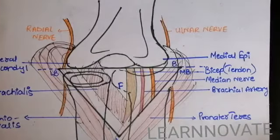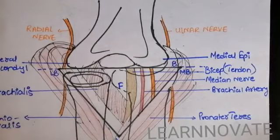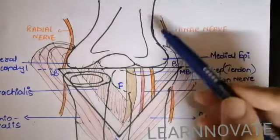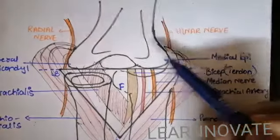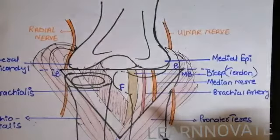This imaginary anterior triangle, or the cubital fossa, is present anterior to the elbow joint and it is called as the transition between the arm and the forearm.